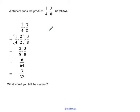Let's take a look at what the student has done. They start off by writing the original problem, one-fourth times three-eighths, and then let's see what's going on in this next step. Here they're one-fourth, they're multiplying by two over two. Now why would they be doing that?